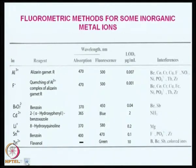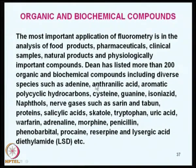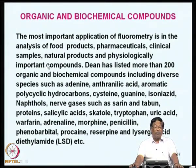Generally, fluorescence methods are available for about 30 to 35 elements, all listed in the database. If you look up the database for spectrophotometry or fluorescence, most of these elements are listed along with their methods, and you can obtain analytical conditions for their determination at ppm or ppb levels. The most important application of fluorometry is in the analysis of food products, pharmaceuticals, clinical samples, natural products, and physiologically important compounds like body fluids and plasma.